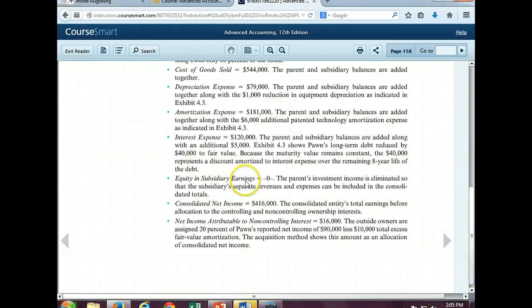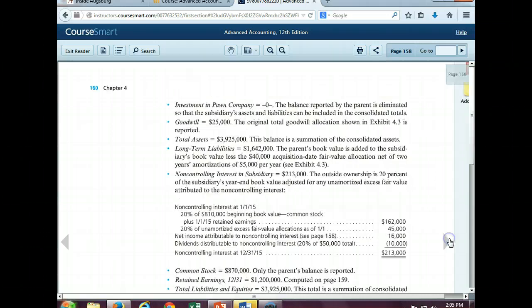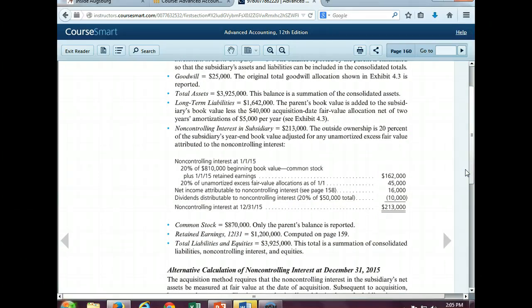is to really look at page 158 and understand how this consolidation is happening. It explains thoroughly how the various accounts are added and how we ultimately zero out the equity in the subsidiary. And how we also determine the non-controlling interest portion of the equity section.